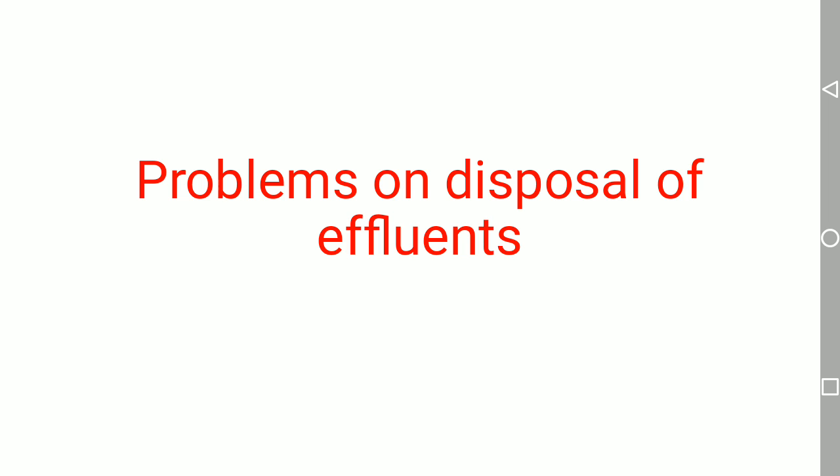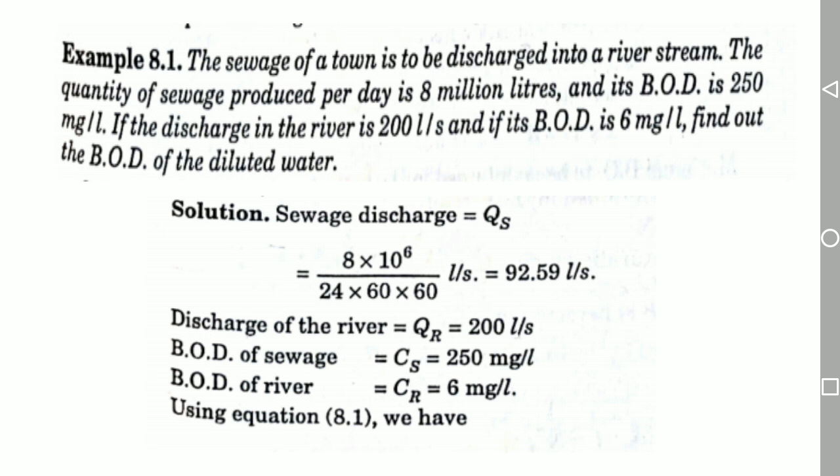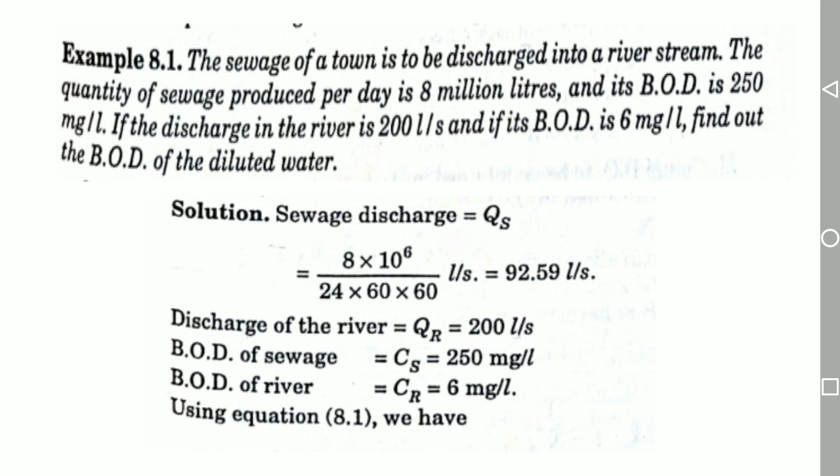In the disposal of effluents problems, you need to calculate the concentration of the mixture whenever effluents have been discharged into the river — that is, the mixed concentration of DO and the chemical oxygen demand for the mixture when it has been mixed with the river water. Based on that, we need to solve some problems.